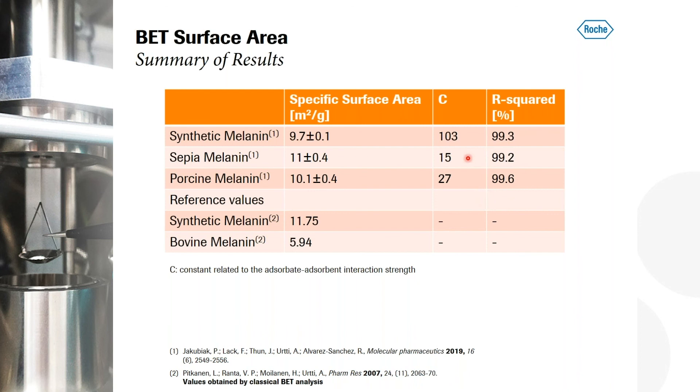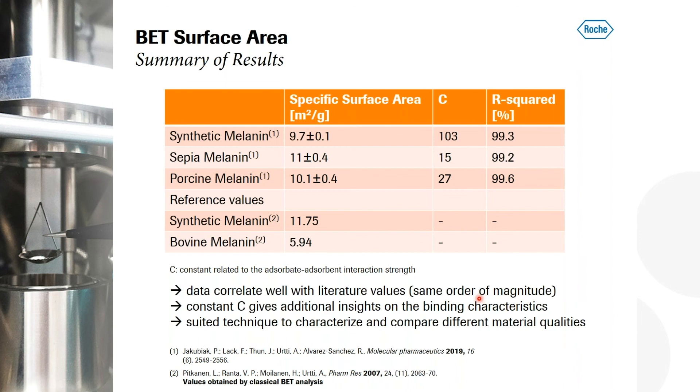And what you also have within the BET equation is this BET constant C, which somehow gives you an idea about the adsorbate adsorbent interaction strength. And to be honest, as I said, I'm not an expert in this, but what you can see here is that this constant is higher for the synthetic melanin compared to the biological samples. And this makes absolutely sense in my opinion, because I mean, the synthetic one is the purest material you can get. And I would think also that the surface is much cleaner compared to the biological samples, which were extracted according to a certain protocol. So I just mentioned that the data correlated well with the literature values. The constant C gives you an additional insight on the binding characteristics. And this seems to be a suited technique to characterize and compare these different materials.